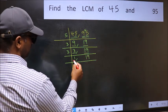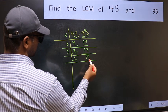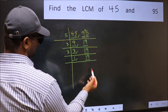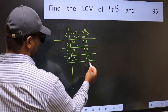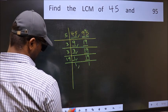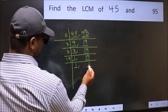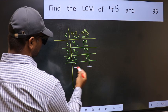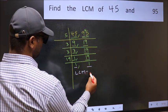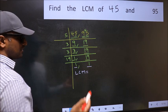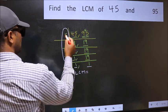Now we got 1 here, so focus on the next number, 19. 19 is a prime number, so 19 once 19. We got 1 in both places, so our LCM is the product of these numbers.